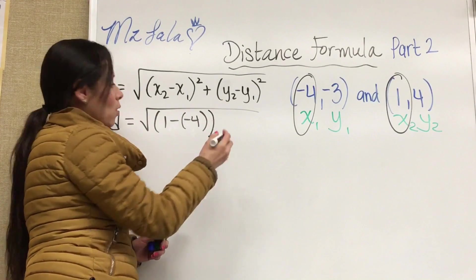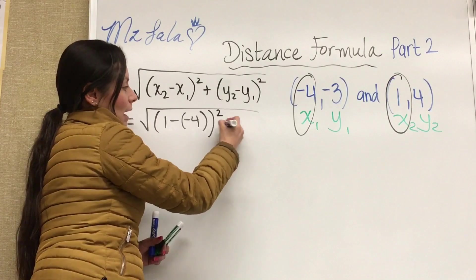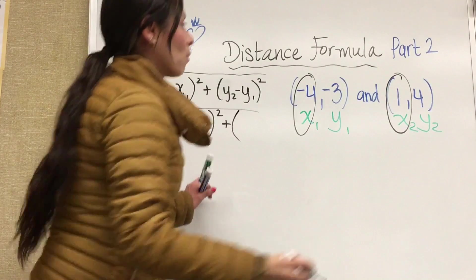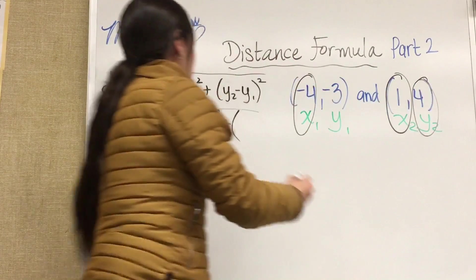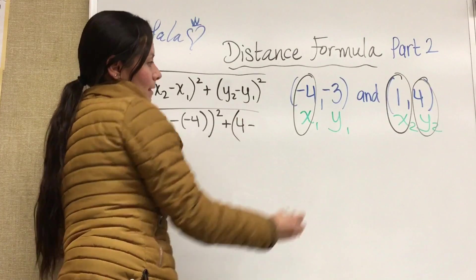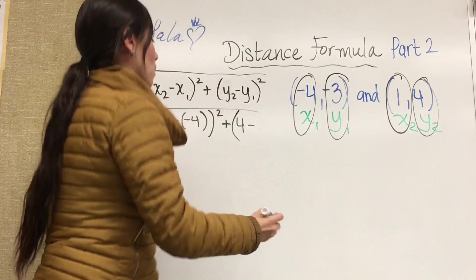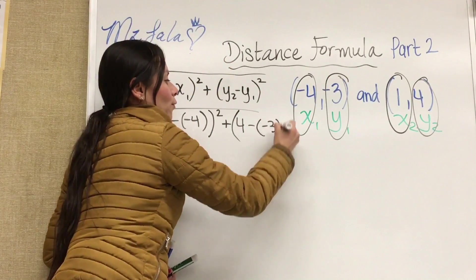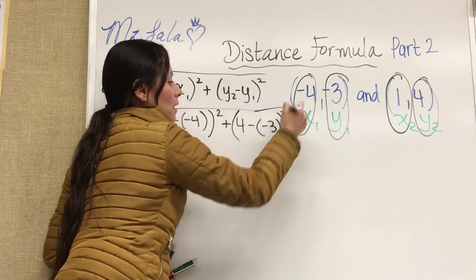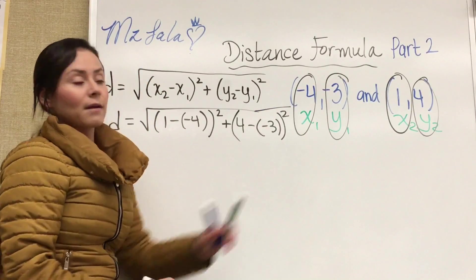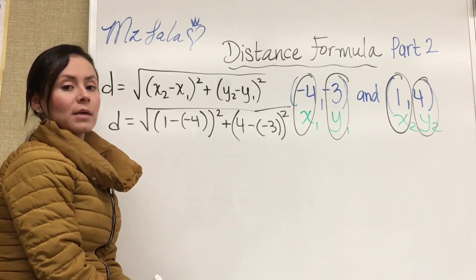And now this must be a double parenthesis and we would square that after and now our second Y is just 4 minus our first Y is negative 3. So we must again put that negative for the 3 and double close it with parenthesis.